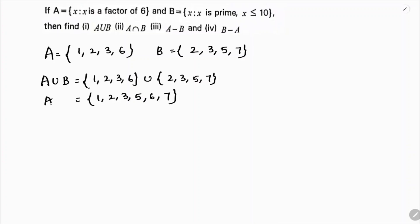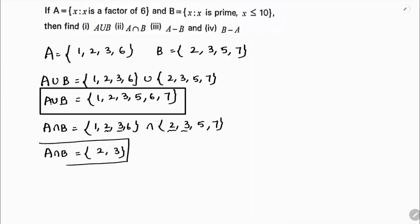Next one, A intersection B. So A is {1, 2, 3, 6} intersection {2, 3, 5, 7}. So if I'll write for A intersection B, A intersection B is nothing but the elements which are common in both. Here we have 2 and 3, so 2 common 3. So this is A intersection B: {2, 3}.